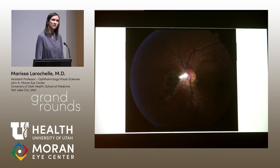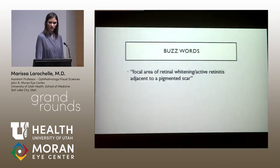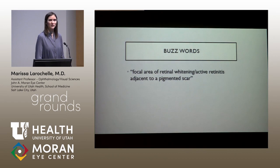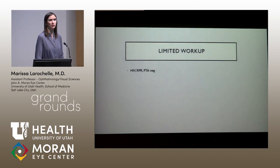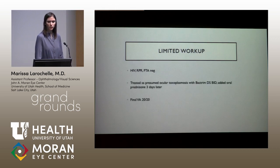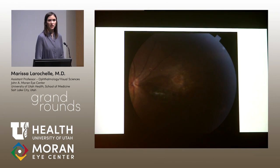Interestingly, in the other eye she has 20/20 vision, asymptomatic, and also has a hyperpigmented scar nasal to the nerve with some fibrosis on the nerve. These are the buzzwords: focal area of retinal whitening adjacent to a pigmented scar — ocular toxoplasmosis. She was uninsured and self-pay, so we limited the workup, ruling out HIV and syphilis, and she was treated as ocular toxo with a great result — just an atrophic scar.